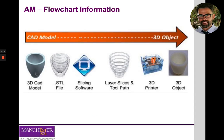Independently of the process chosen — whether extrusion-based or VAT photopolymerization — the workflow from design to physical replication is common to all. You normally start by designing your object using, for example, SolidWorks. After that you create a triangulated surface model, also called an STL file. Then, using slicing software, you slice the model into layers of homogeneous thickness, and this information along with numerical coordinates is sent to the 3D printer, which replicates each layer and stacks them to create the physical object.